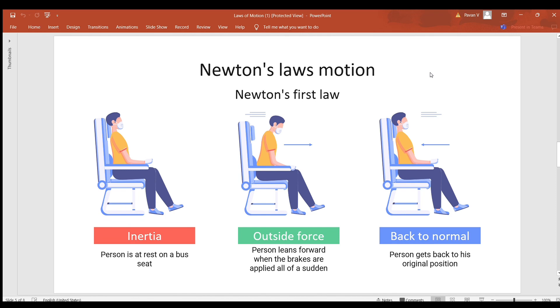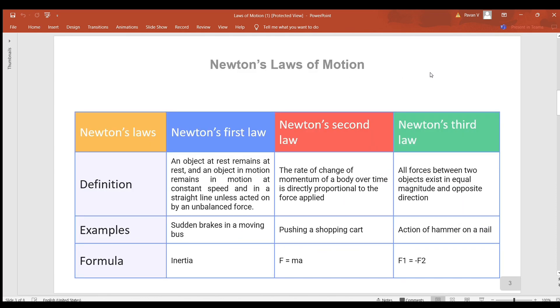For example, a person is traveling in a bus. If sudden brakes are applied, the person falls forward due to inertia, and again comes back to his initial position.